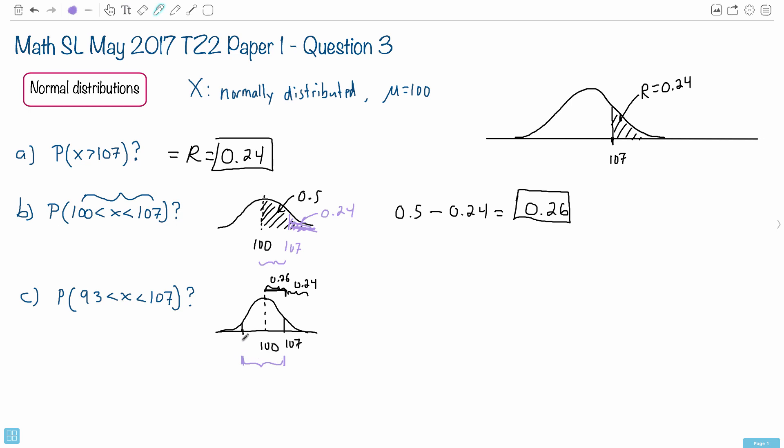So we want it from 93, from that value of 93 all the way up to 107. Keep in mind, we already know the area or the probability from 100 to 107. We know that value is 26% or 0.26.